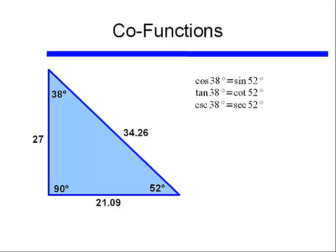So cosine of 38° equals sine of 52°, tangent of 38° equals cotangent of 52°, and cosecant of 38° equals secant of 52°. What is the relationship between 38° and 52°? They are complements of each other — that is, 52 degrees equals 90 degrees minus 38 degrees.